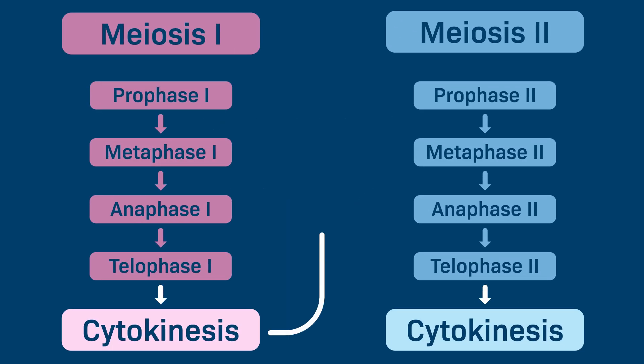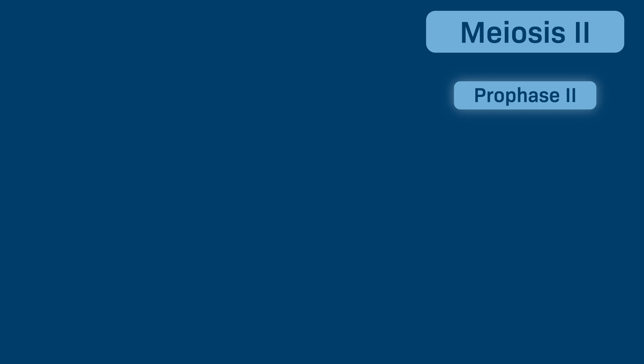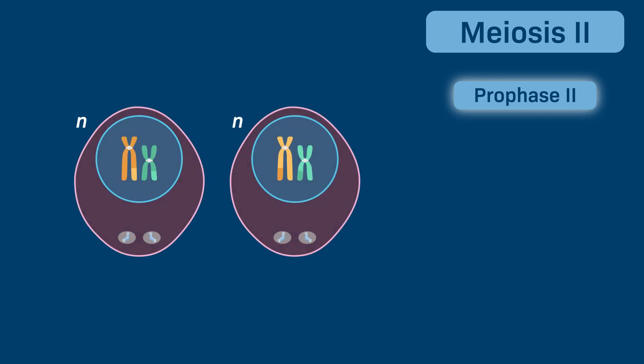Meiosis II follows after the first cytokinesis and begins with prophase II. During prophase II, the nuclear envelopes break down and the meiotic spindles form in each of the cells.